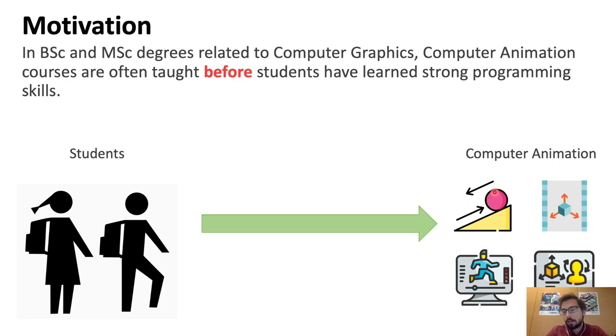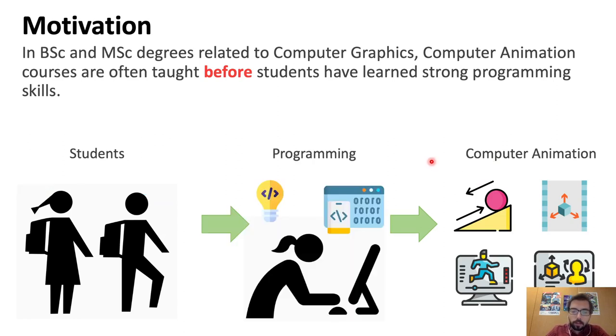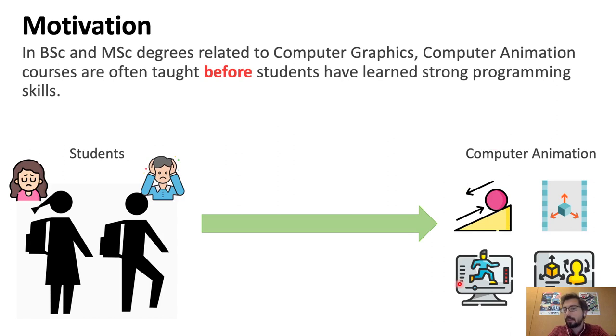So then they are assigned a set of tasks that they cannot easily address because they don't have the necessary programming skills developed. So then students can potentially get sad and a bit depressed because they cannot efficiently address the tasks that they are assigned because they usually get stuck into programming problems instead of concepts related to computer animation, for example. So a good way to address this would be to first teach them how to do programming and then once they know how to program, then ask them to do the computer animation assignments so then they know how to write basic code. However this is not the case. Usually they face computer animation at the same time that they are being taught how to program.